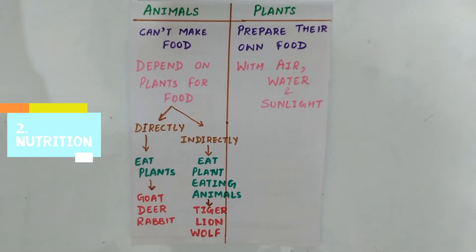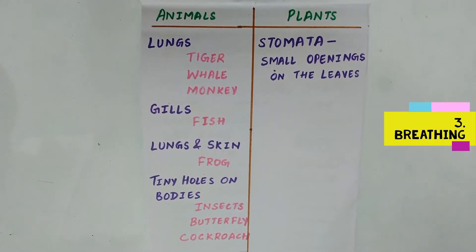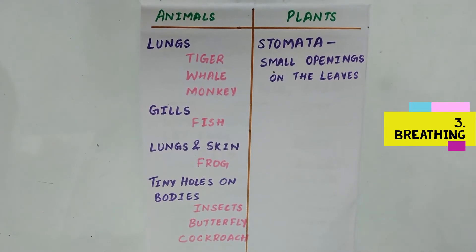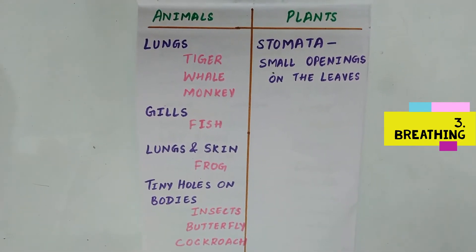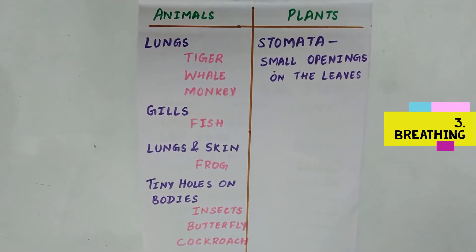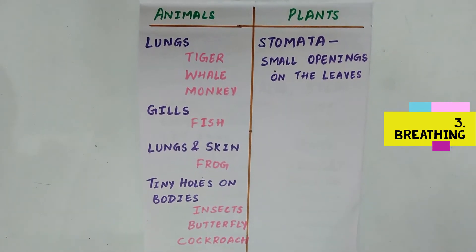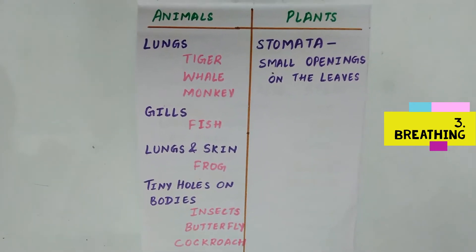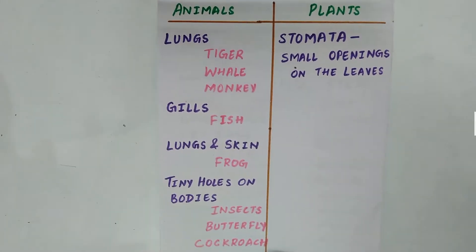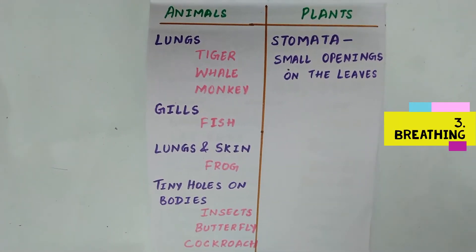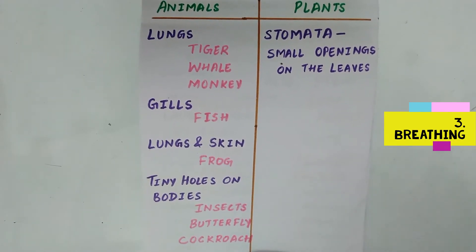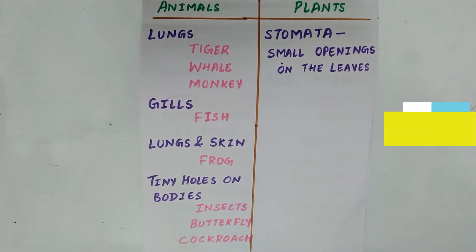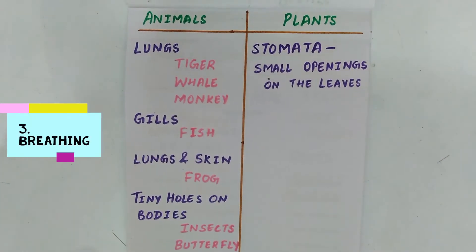Some animals have lungs — for example, tiger, whale, and monkey. Some have gills — for example, fish. Some have lungs and skin — for example, frog. Some have tiny holes on their bodies — for example, insects like butterfly and cockroach.